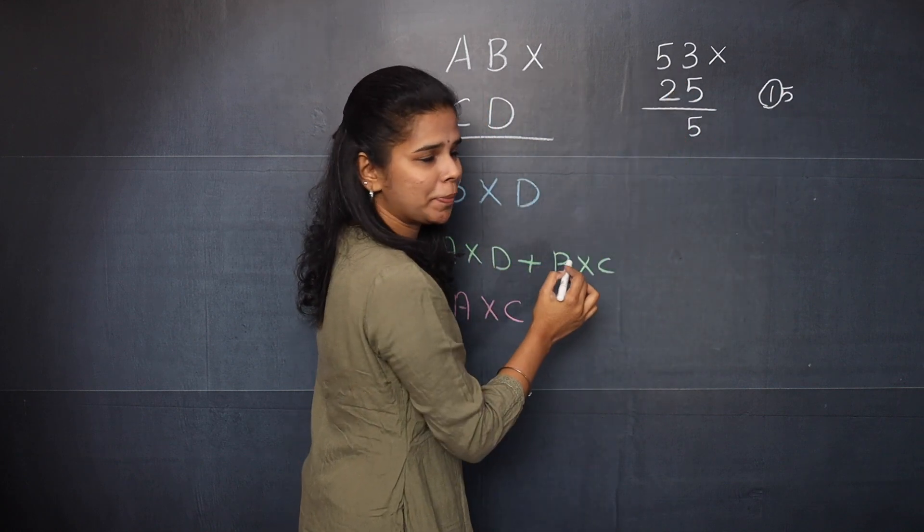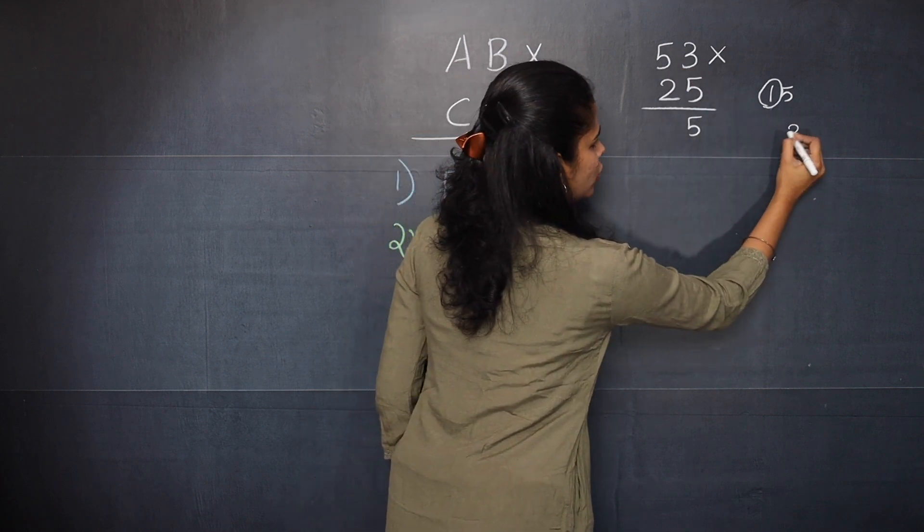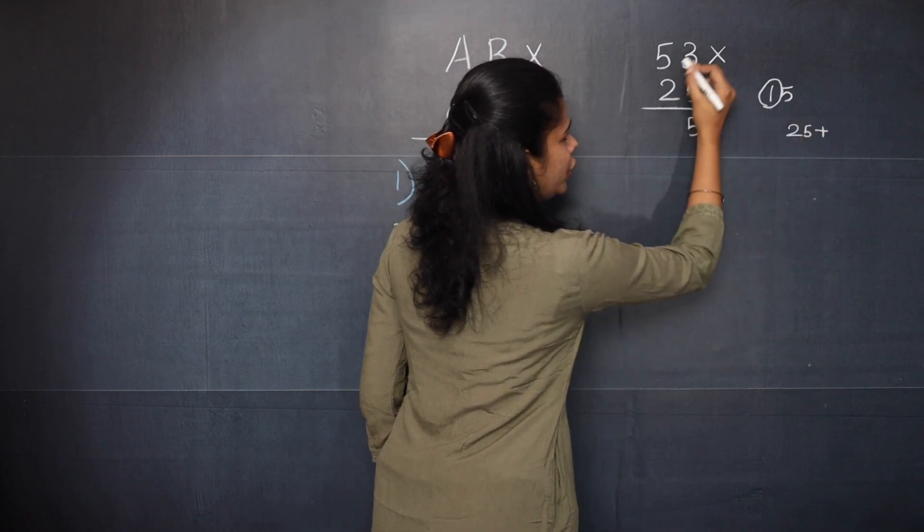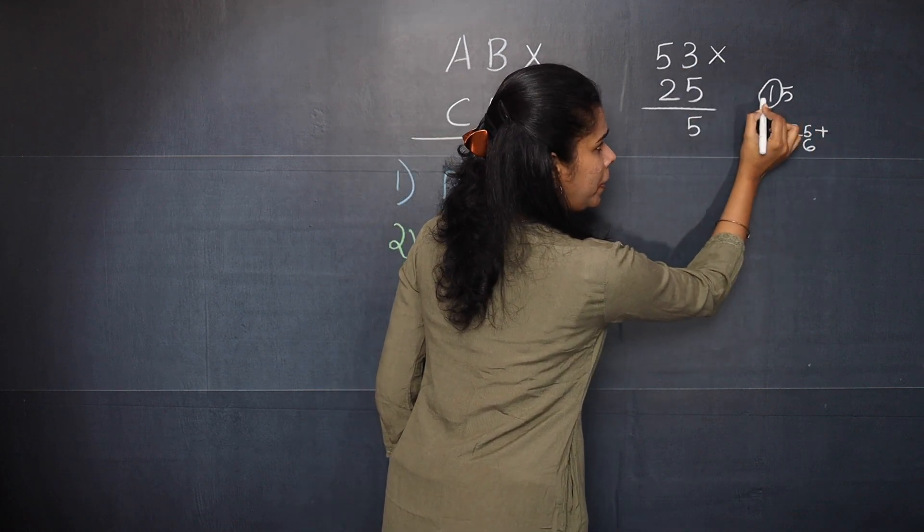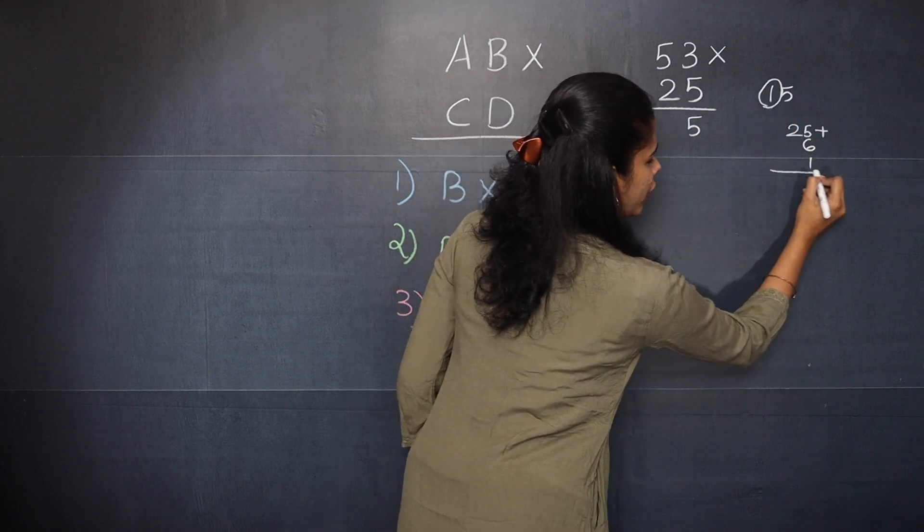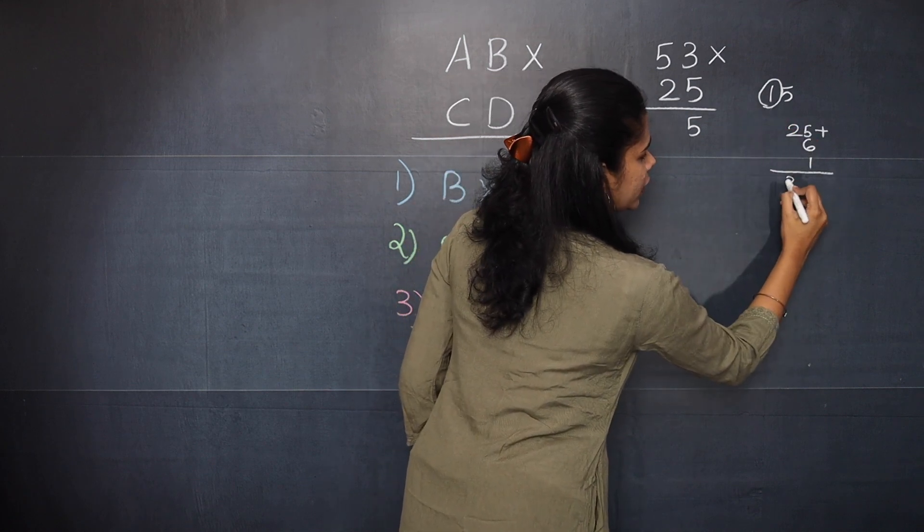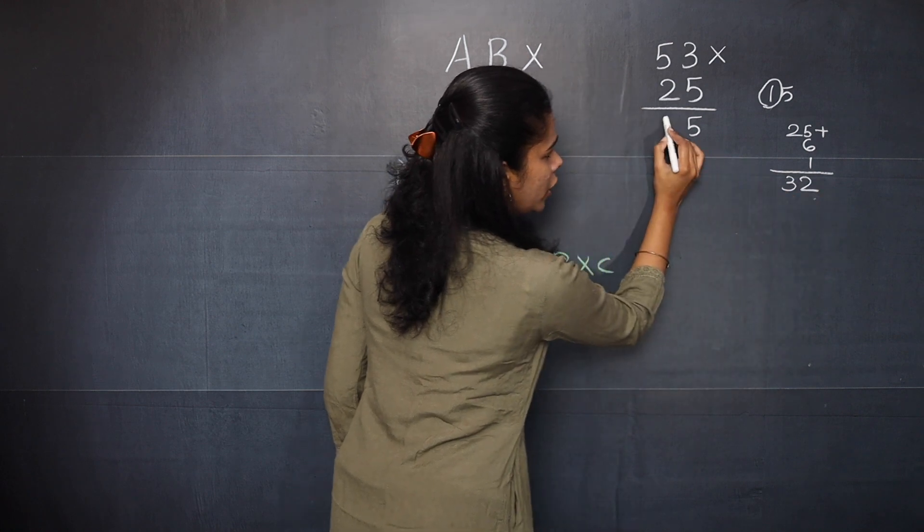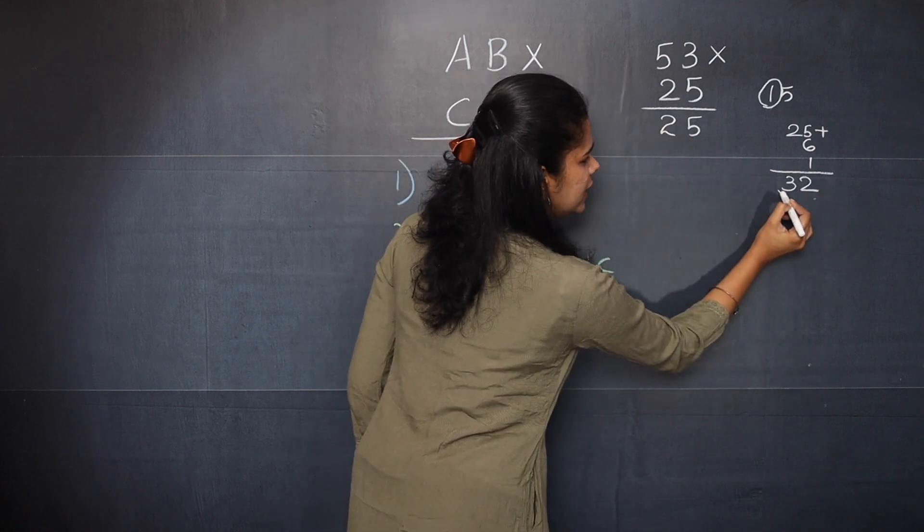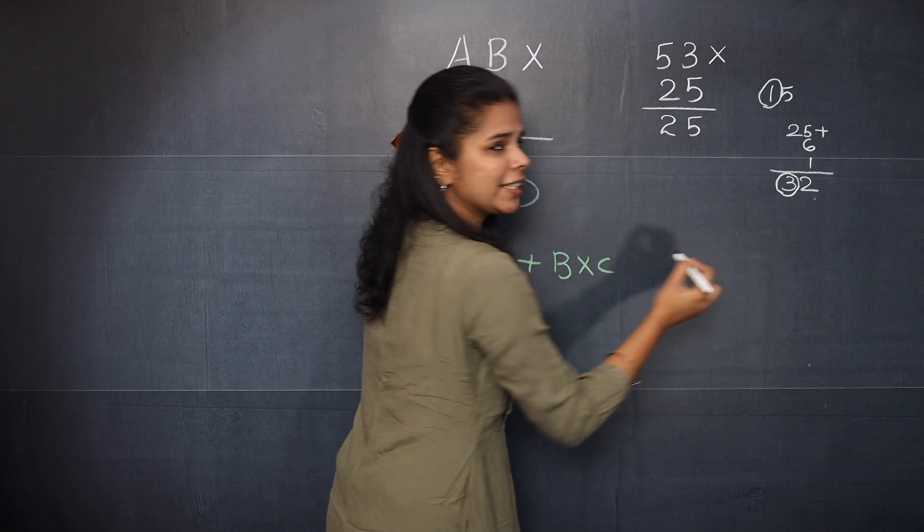Now you will cross multiply and add. 5 into 5, 25. Plus 2 into 3, 6. And plus this carry over 1. So when you add you will get 32. So here you will write 2. And this 3 will be your next carry over.